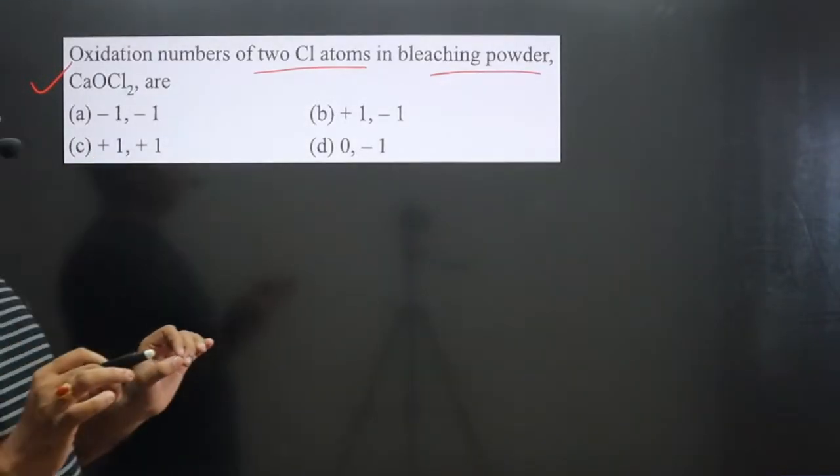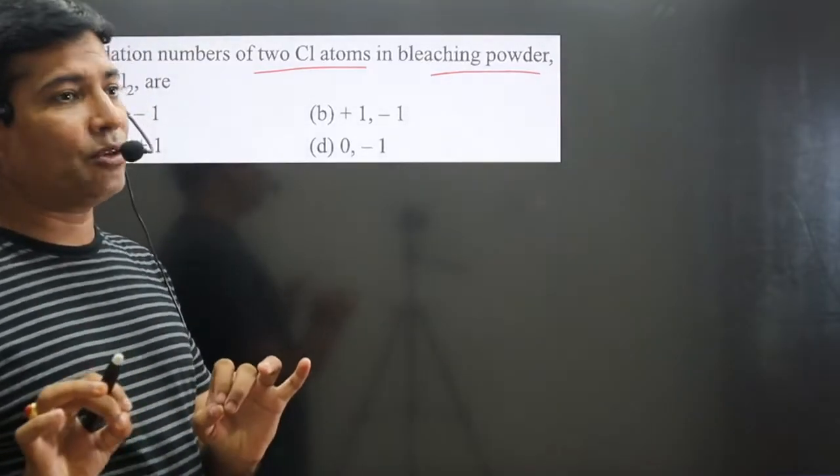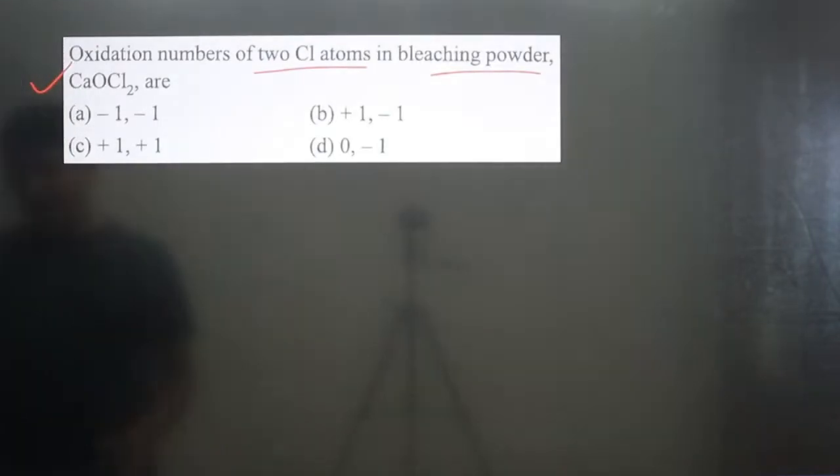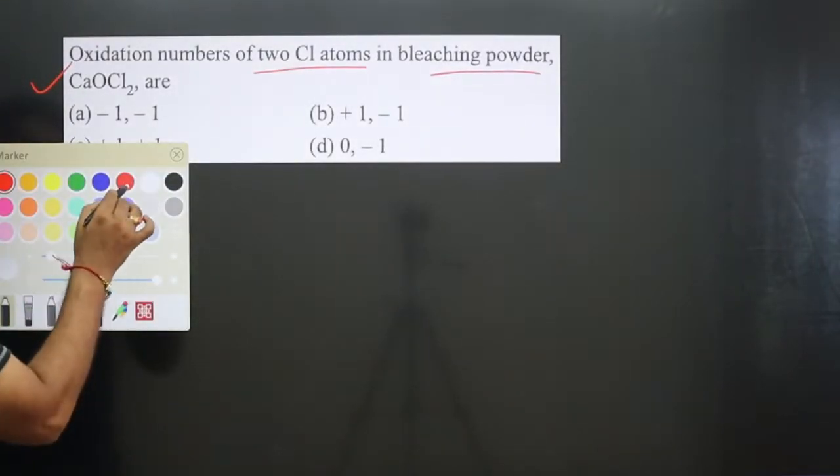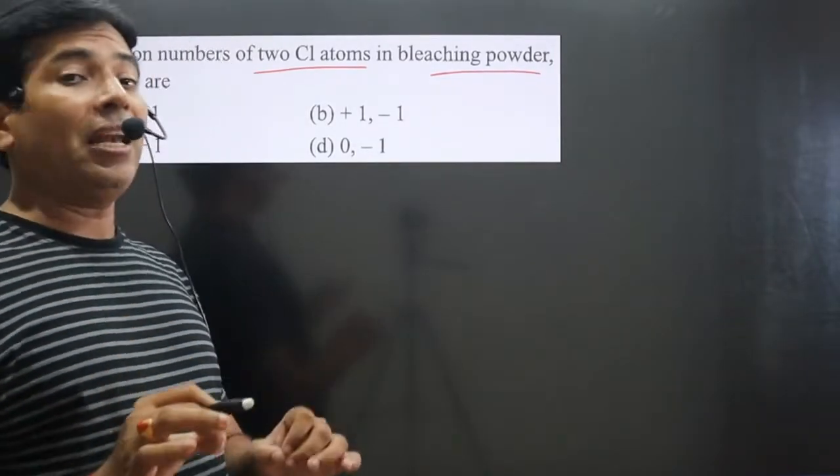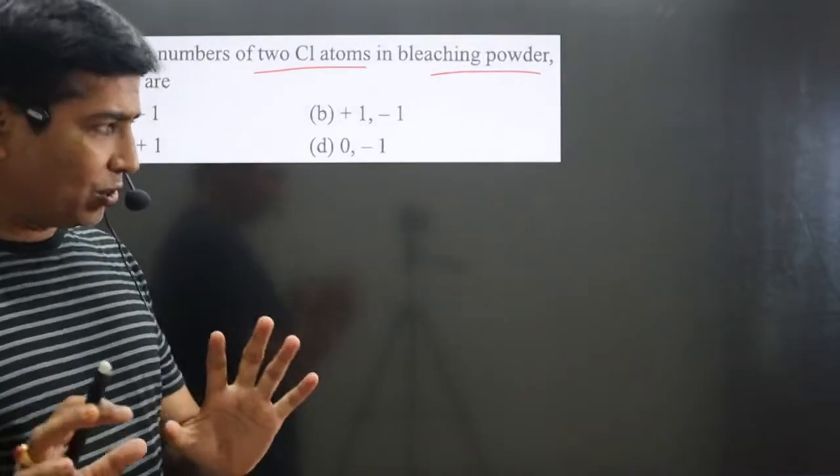Whenever we calculate the oxidation number of each halogen atom in bleaching powder, we always draw the structure. By drawing the structure, we can calculate. Otherwise, you may make a mistake. By drawing the structure, we come to know about the environment of the element because as the environment changes, the oxidation number also changes.